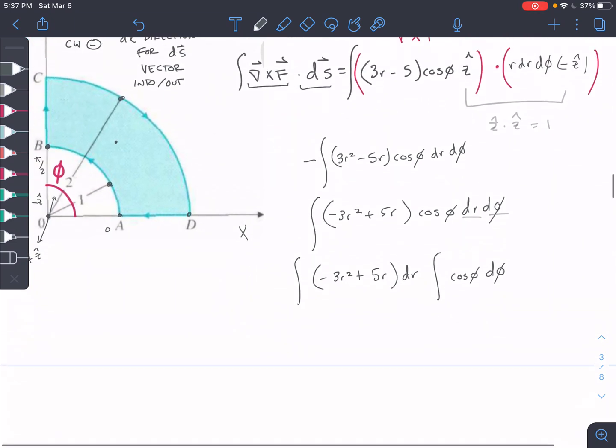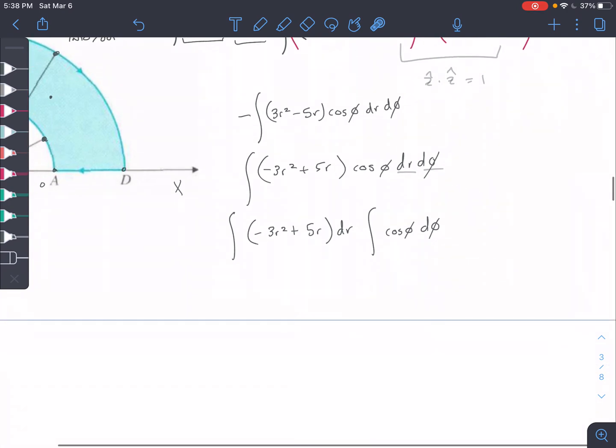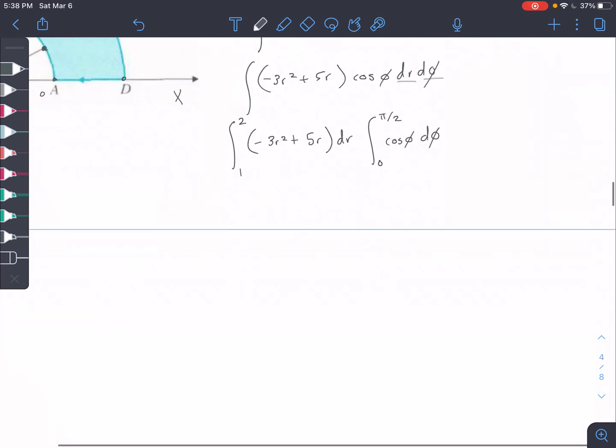Okay, so let's look at our bounds here. So for the shape of this quarter cylinder, our bounds are going to go from this inner radius minus 1 to this outer radius 2, so from 1 to 2, and then our phi bounds are going to go from 0 to pi over 2. So 0 to pi over 2 for phi, and then from 1 to 2 for the radius.